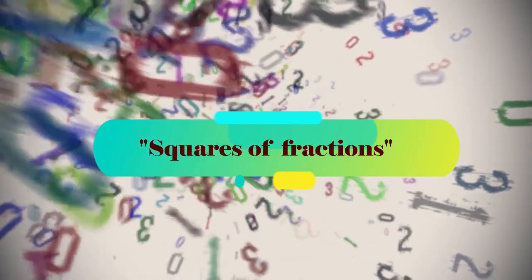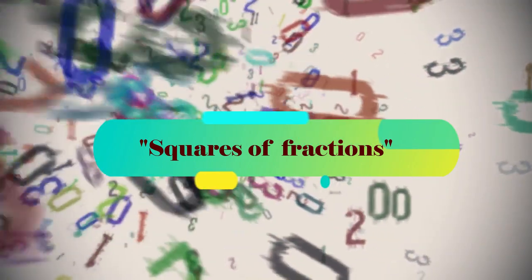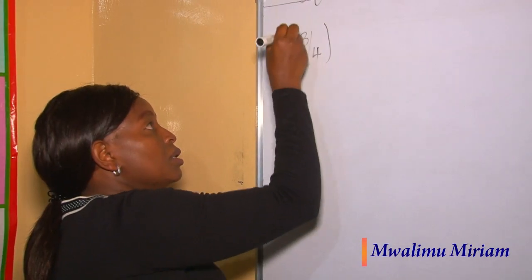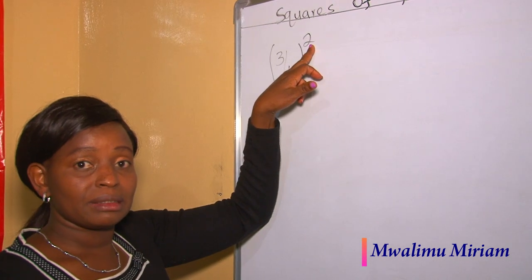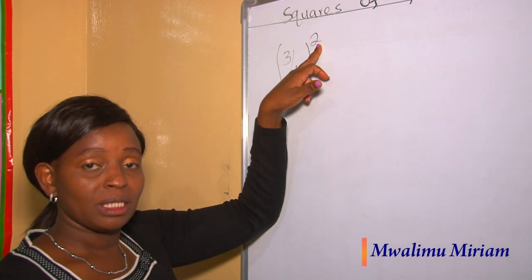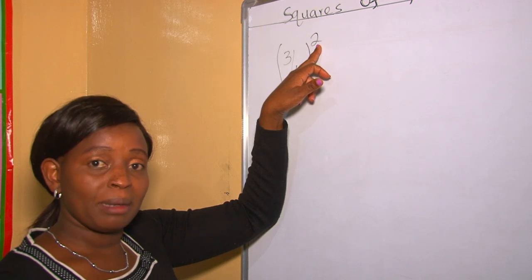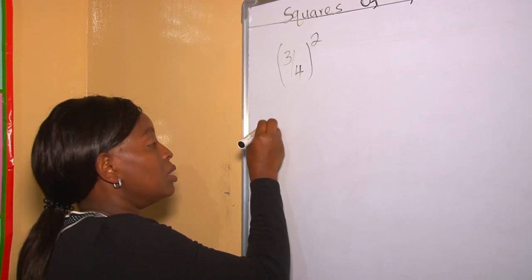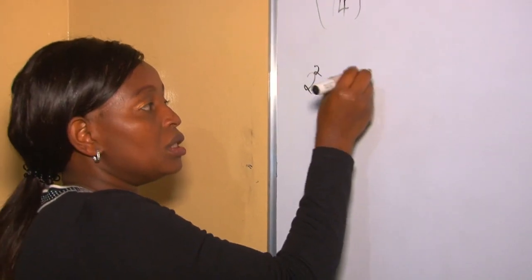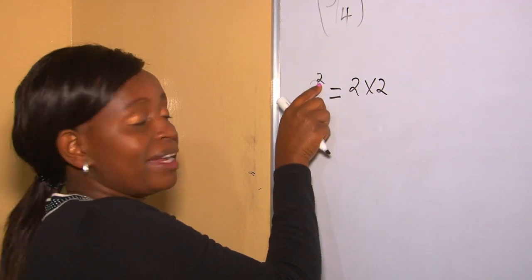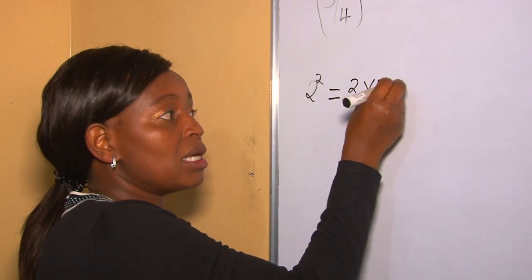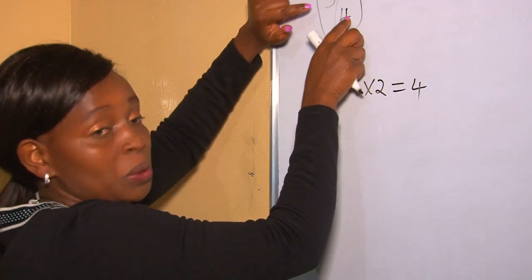Welcome to my YouTube channel. Today's lesson is about squares of fractions. Given a fraction like three quarters, the small two in mathematics means you square that number. To square a number is to multiply the number by itself. For instance, two squared will be two times two, and the answer will be four.